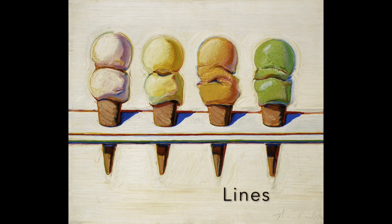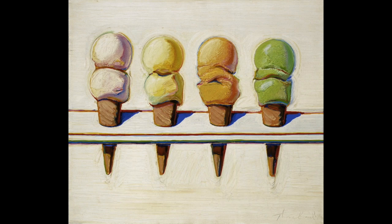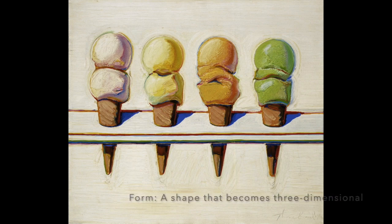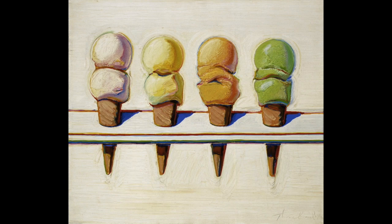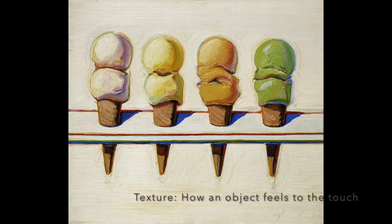You can see lines. You can see shapes created from the ice cream cones. The ice cream cones have form because they are three-dimensional. They take up space within the artwork plane. There are different colors involved in this painting.